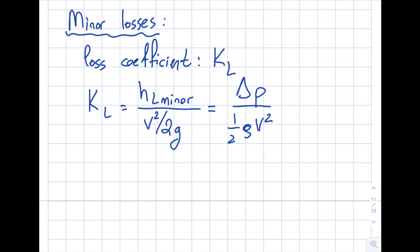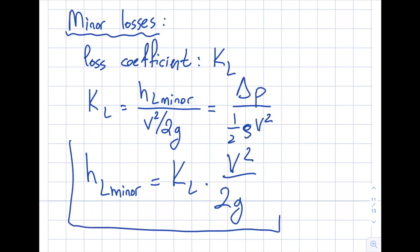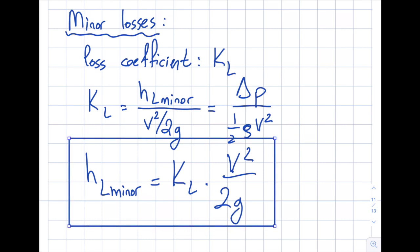You may remember this delta P over 1 over 2 rho v squared from the major losses. That was the left hand side. This is my pi 1. So basically what I'm saying is this pi 1 will be equal to this. Manipulate this h_L. I want to just simply take this and put it over here and rearrange it for my own convenience. And I'll get myself h_L minor that I'm interested in is going to be K_L times v squared over 2g. So this is a fairly simple way of analyzing it.